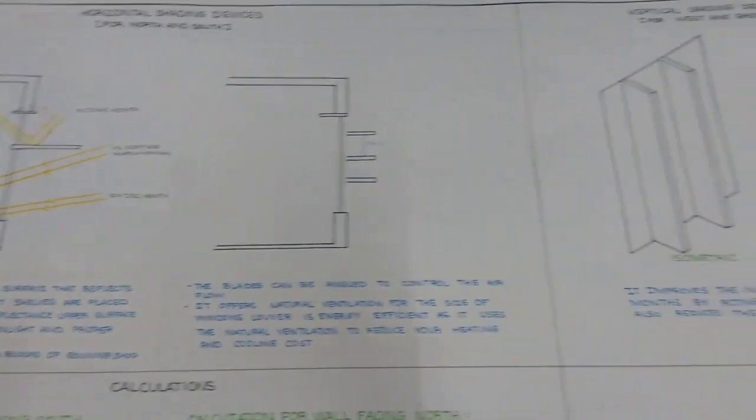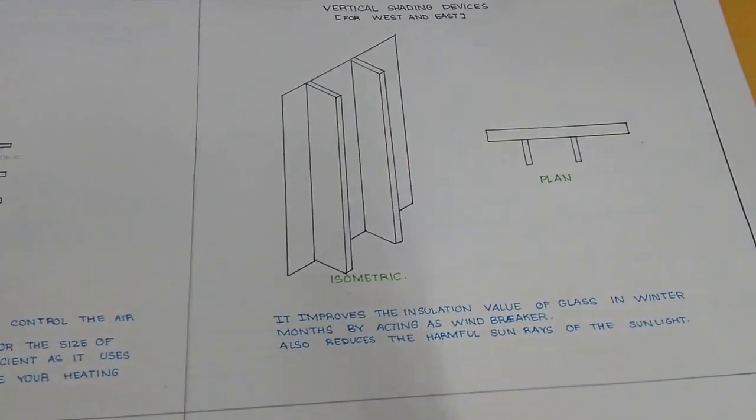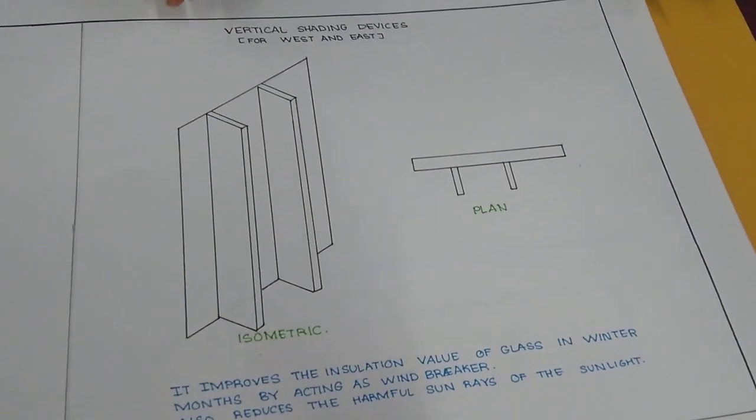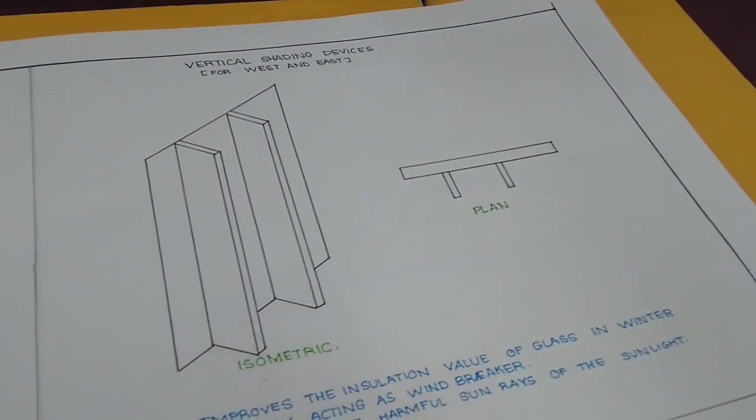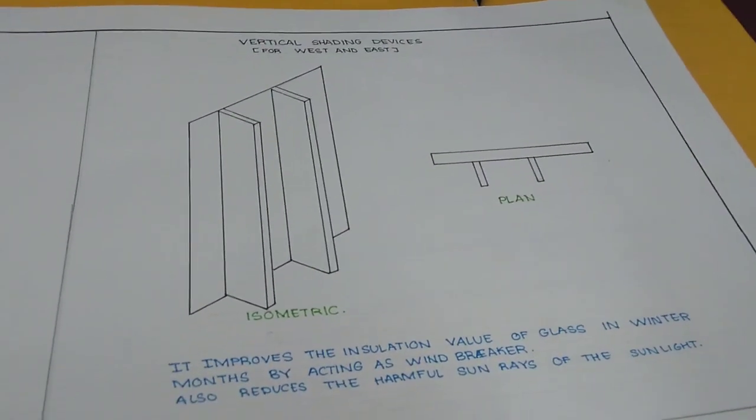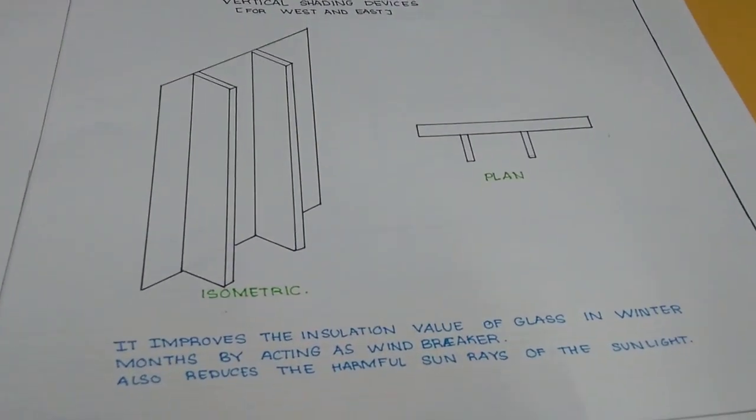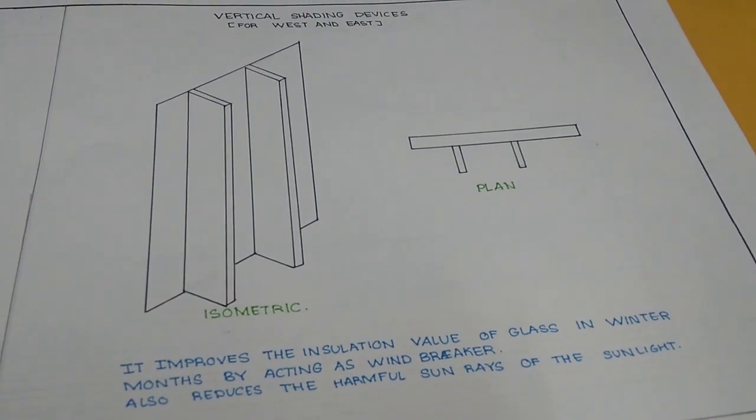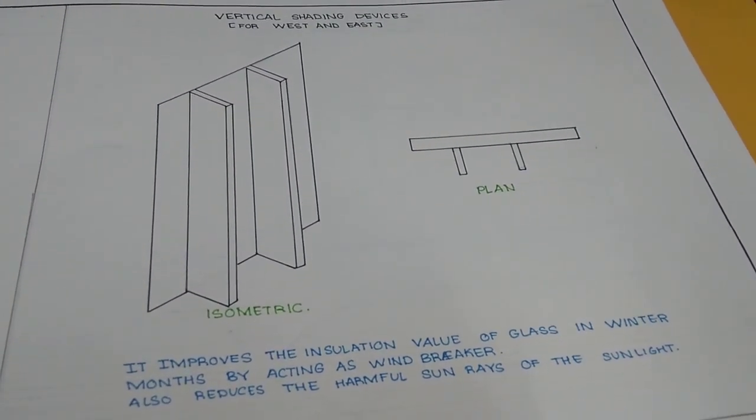The vertical shading devices which I have incorporated here are in proper 90 angles and 45 angles. It improves the insulation value of the glass in winter and also reduces the harmful sun rays from coming into the interiors.